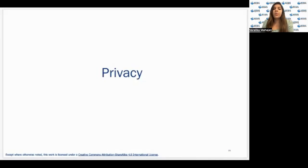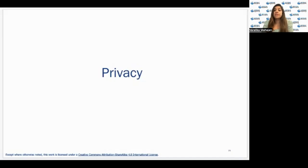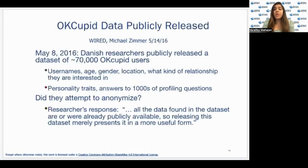To begin with, what is privacy? Privacy is a basic human need. Privacy is not black and white — it is an exercise of control. Loss of privacy occurs when there's a loss of control over our personal data. For example, OkCupid publicly released the data on their app on May 8,